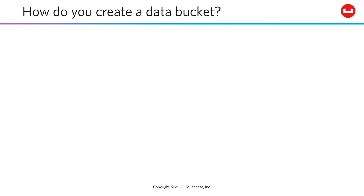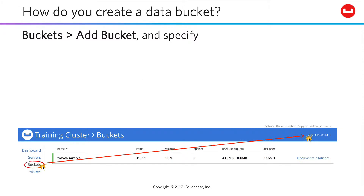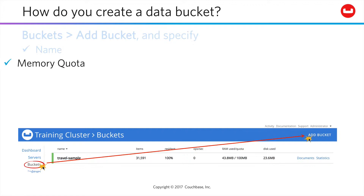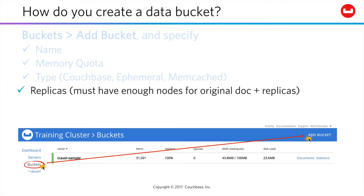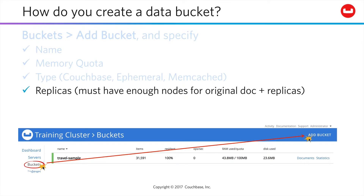Adding a bucket is easy. Click Add Bucket, then specify the name, the per-node memory quota, and the type — whether that is a persisted Couchbase bucket, a non-persistent in-memory ephemeral bucket, or a more limited cache. Then you'll set your replica count up to three, remembering that replicas never reside on the same node as their active document, so you must have more nodes in your cluster than your chosen replica count.